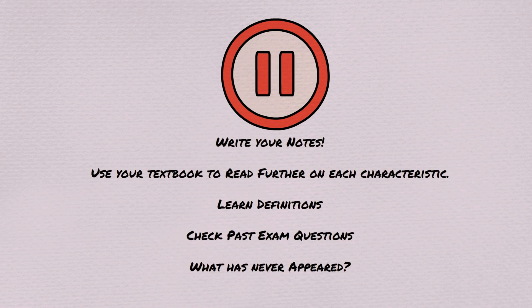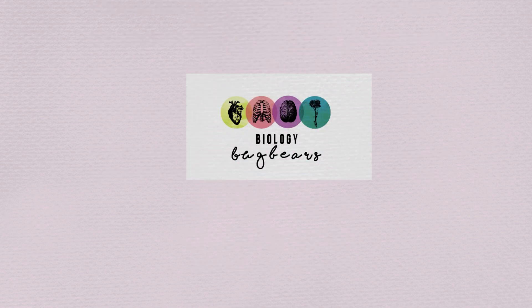This is a short topic with some important definitions. Pause the video now, write your own notes, and use your textbook to read further on each characteristic. Consider how they link in with metabolism and continuity. Learn the definitions — really important. Check past exam questions and ask yourself what has never appeared. Best of luck with all of that revision and learning.